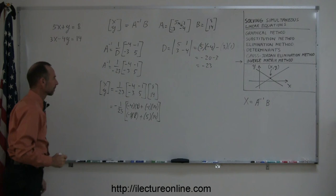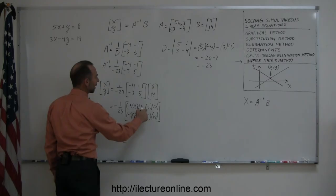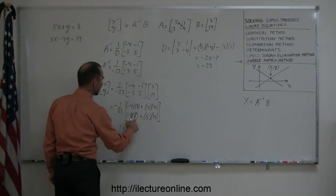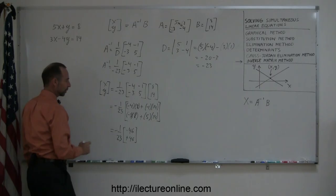Okay, now we simplify, so this is equal to minus 1 over 23, times minus 4 times 8 is minus 32, minus 1 times 14 is minus 14, that's minus 46. And here minus 3 times 8 is minus 24, 5 times 14 is plus 70, plus 70 minus 24 is plus 46. And then multiply times minus 1 over 23, this is equal to a positive 2 and a minus 2.